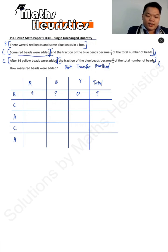Some red bits were added. You don't know how many were added, so you put a plus question mark here. Okay, then the fraction of the blue bits became 2 fifth of the total number of bits.